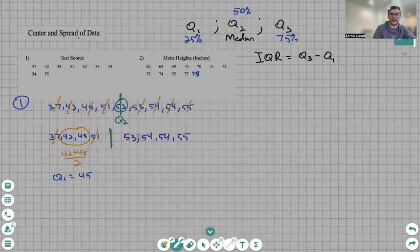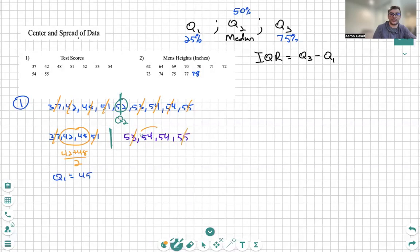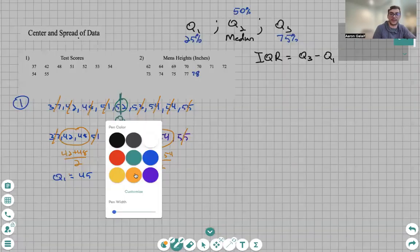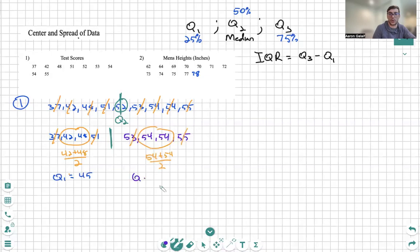Next let's find Q3. Again we cancel, cancel both of these. Two numbers the same. When the two numbers are the same it's safe to say that they're both the same, however it is good and important that we still show our work. So Q3 is equal to 54.